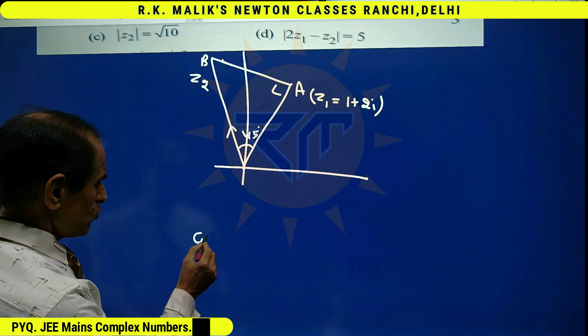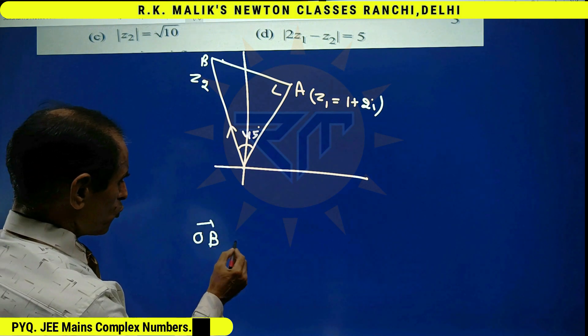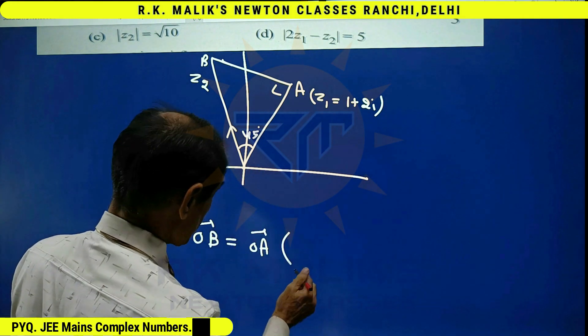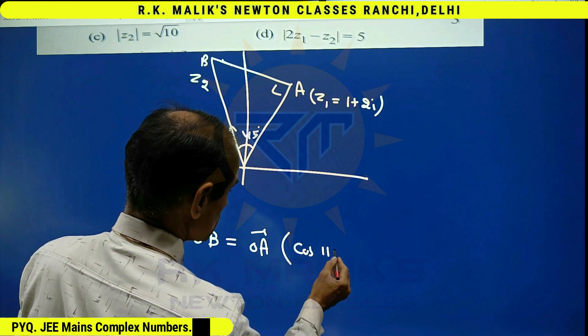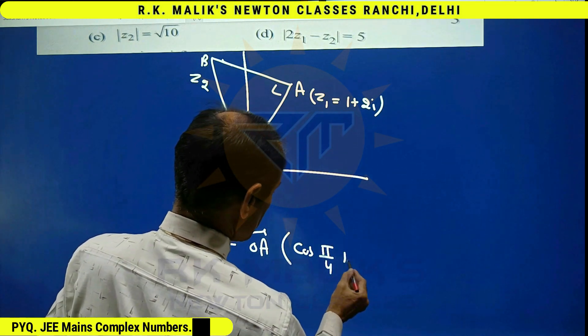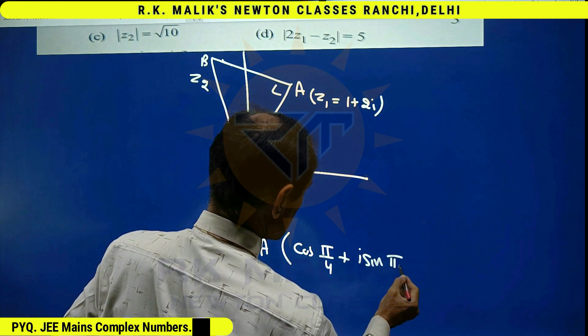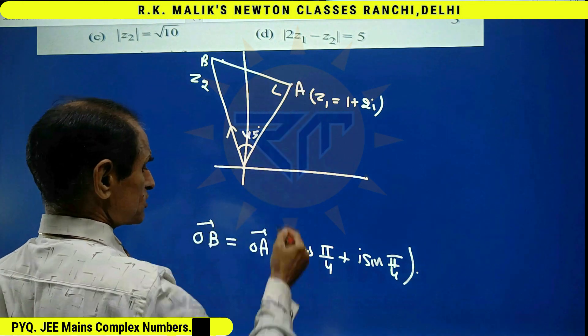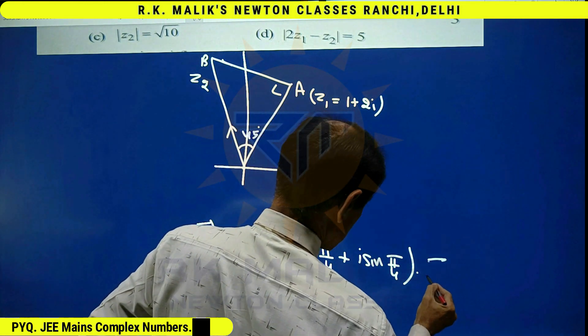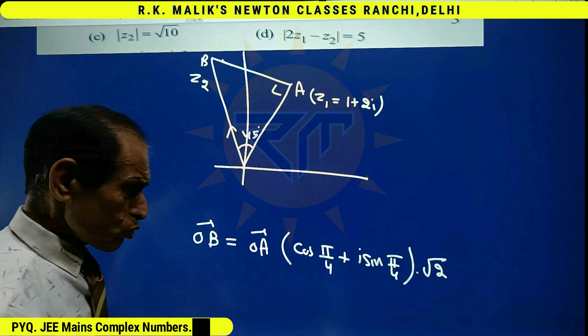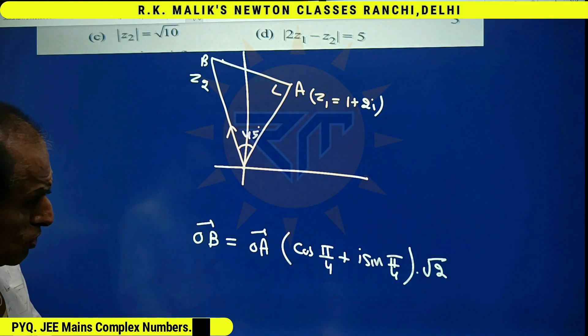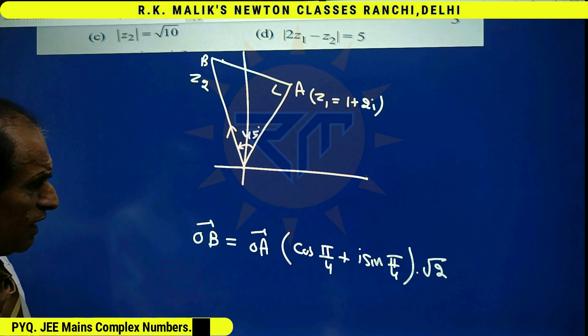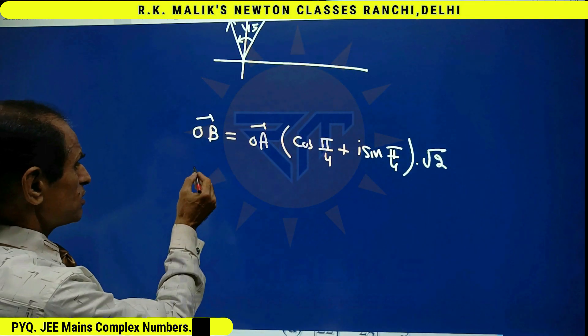I can say that OB is equal to OA into cos(π/4) plus i sin(π/4) into final length upon initial length is root 2. Therefore, root 2 will come. Here, angle is positive because from OA to OB, the direction is anticlockwise.